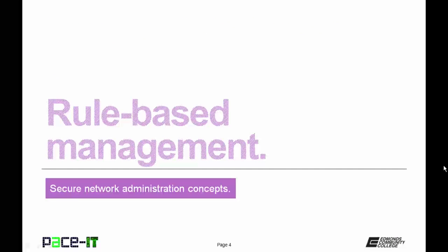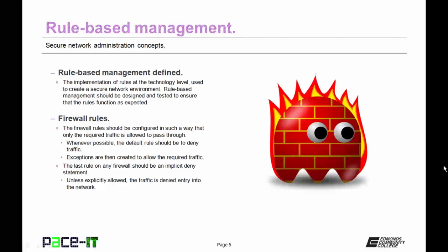First up is rule-based management. Rule-based management is the implementation of rules at the technology level which are used to create a secure network environment. Rule-based management should be designed and tested to ensure that the rules function as expected. Firewall rules fall under rule-based management. The firewall rules should be configured in such a way that only the required traffic is allowed to pass through the router.